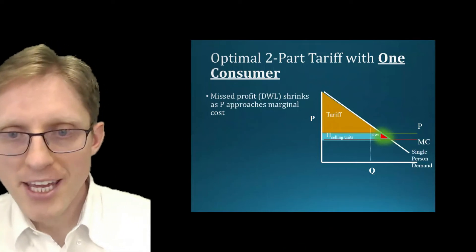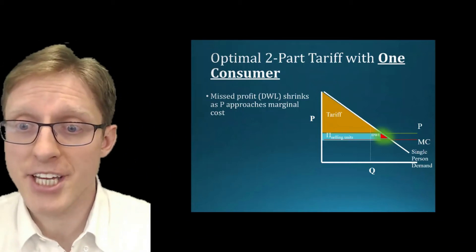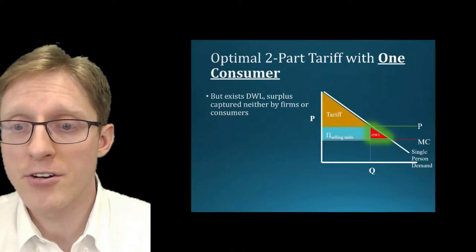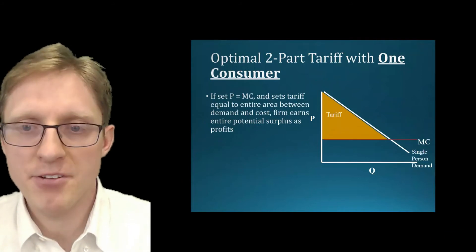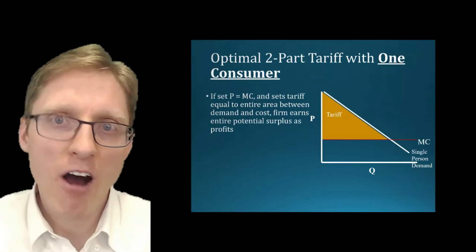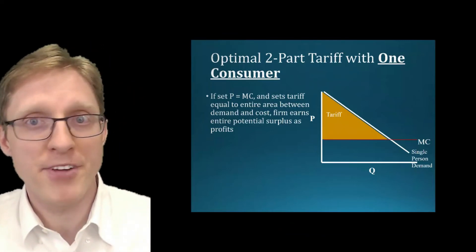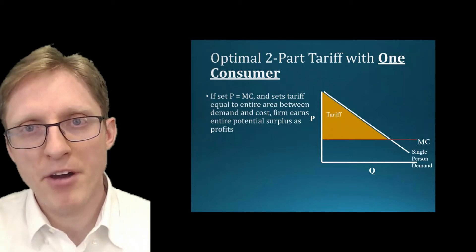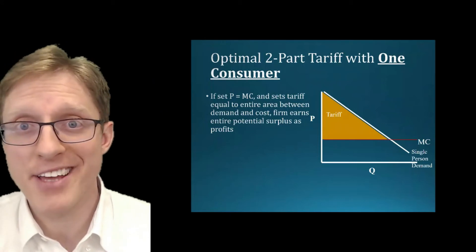If they were to charge a lower per unit price — moving the green line down — that changes the shapes of the orange and blue areas. The key point is that the sum of the orange area and blue area, which are the firm's profits, actually increases. The deadweight loss area shrinks when they lower the price, and if you lower the price all the way to marginal cost, that maximizes the firm's profits. All the profits then come from the tariff. Think of something like Costco or Sam's Club — they charge a price equal to marginal cost and a membership fee, and that's where all their profits come from. This is the optimal strategy when all individuals have exactly identical inverse demand curves.